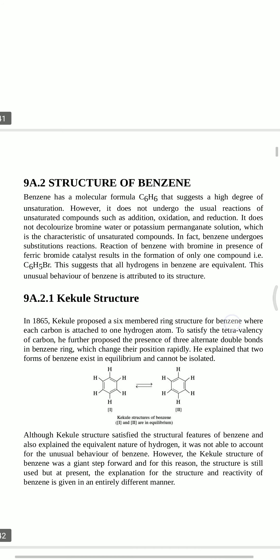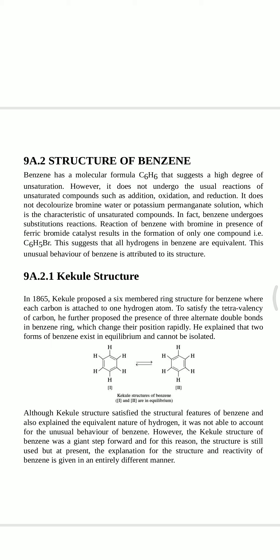Next is the structure of benzene. Benzene has a molecular formula C6H6, which has a high degree of unsaturation, but it does not undergo unsaturated compound reactions such as addition reactions, oxidations, reductions, and cannot give decolorization of bromine or potassium permanganate — the confirmatory test for unsaturated compounds. In fact, benzene undergoes substitution reactions. Reaction of benzene with bromine in the presence of ferric bromide catalyst results in formation of only one compound, bromobenzene (C6H5Br), suggesting all hydrogen atoms of benzene are equivalent in nature.